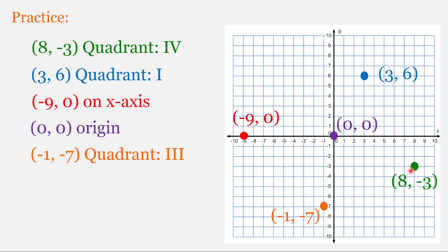Just looking at the green point first. We have an x value of 8 and a y value of negative 3. So our ordered pair is 8, negative 3. And then this is quadrant 4.